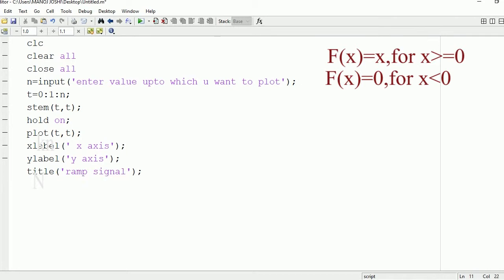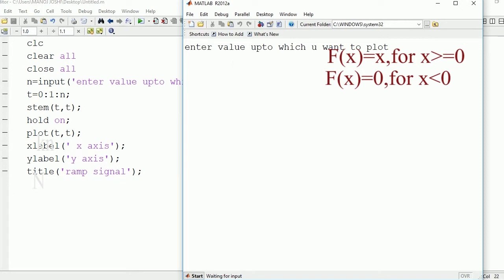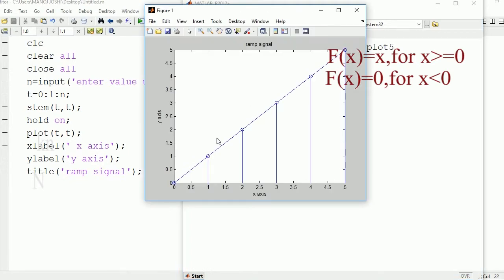Now we're going to run it. Enter the value up to which you want - five. So enter the value up to which you want to plot - five. Here you can see the ramp signal up to value five, from zero to five, and the title is ramp signal.